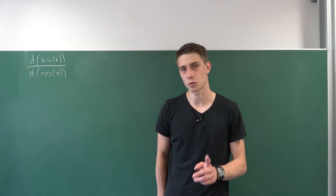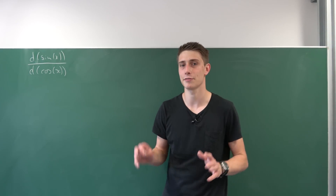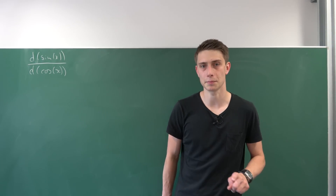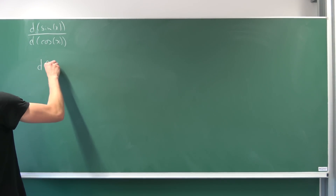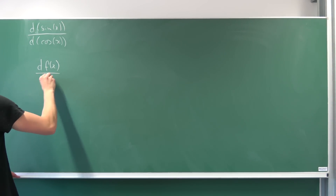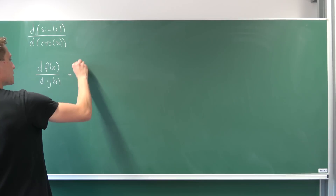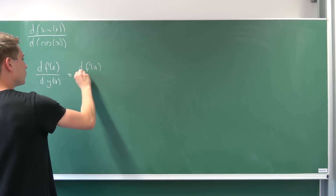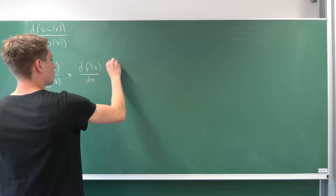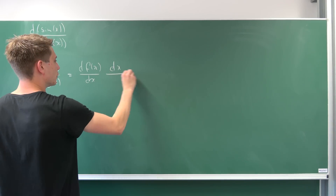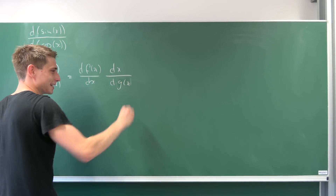So first I would like to introduce the chain rule. You know it, you definitely know it, but maybe you don't know the Leibniz notation for the chain rule. So suppose we have f of x differentiated with respect to some function g of x. The Leibniz notation for the chain rule says that we differentiate f of x with respect to x first, and then multiply by the differential of x with respect to g of x.